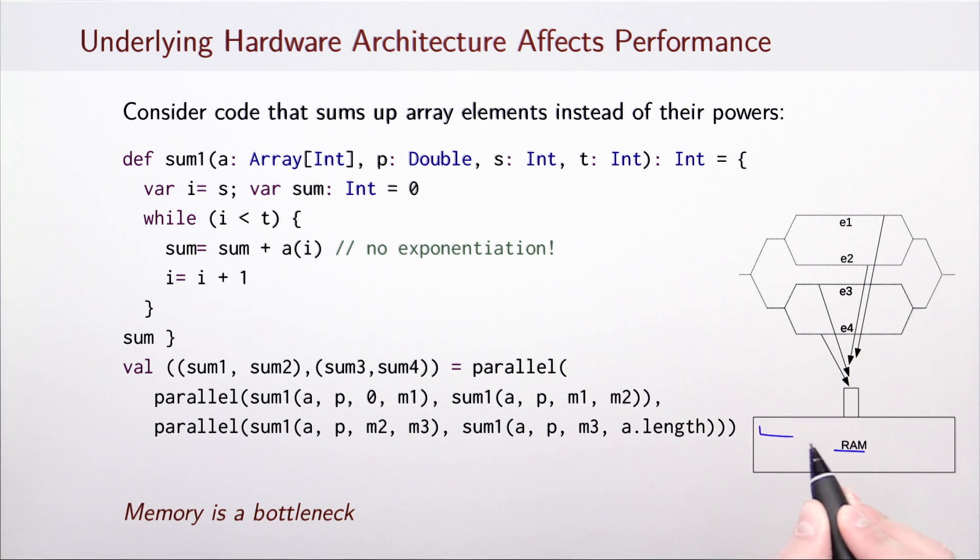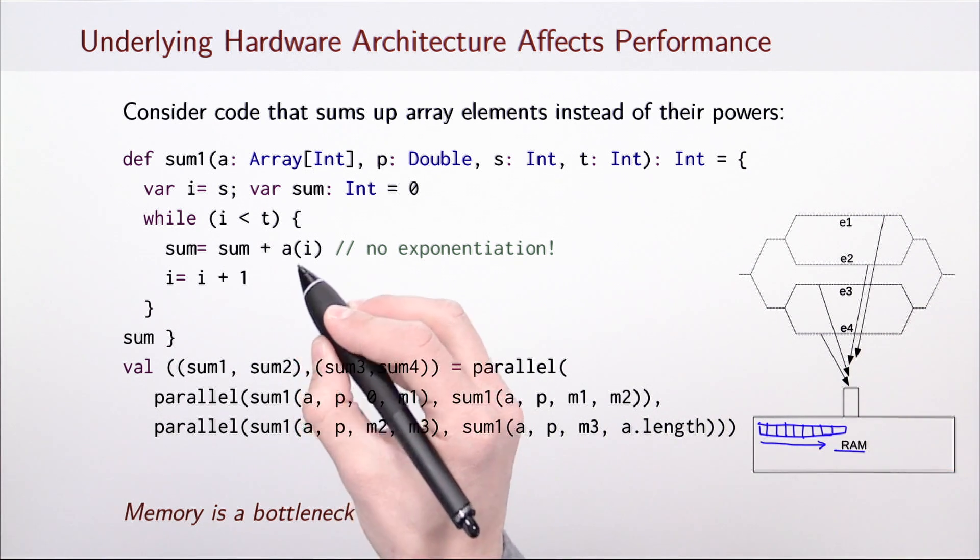It turns out that this computation is bound by the memory bandwidth. The array is stored in random access memory, which even if we have multiple processors, is shared across them. Whether we have one or more cores working, they will all end up accessing the array elements through the same memory unit. That means that the time that the computation takes cannot be less than the time it takes to fetch the entire array from the memory into the processor. Therefore, when considering opportunities for speedup, we must take into account not only the number of cores, but also the parallelism available for any other shared resources that we might need, such as memory in this case.